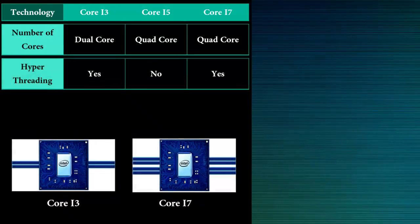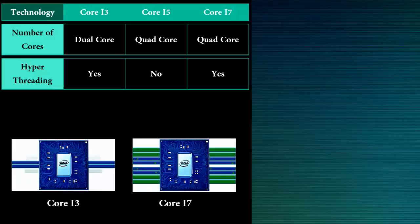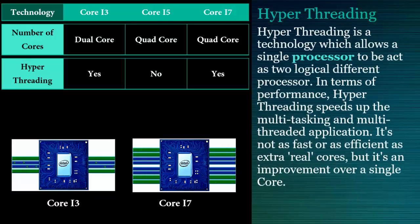Hyper-Threading: Core i3 and Core i7 support Hyper-Threading technology whereas Core i5 does not. Hyper-Threading technology allows a single processor to act as two logical different processors. In terms of performance, Hyper-Threading speeds up multitasking and multi-threaded applications. It's not as fast or as efficient as extra real cores, but it's an improvement over a single core.